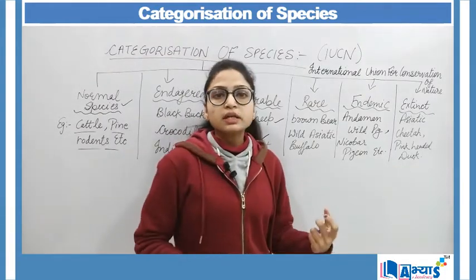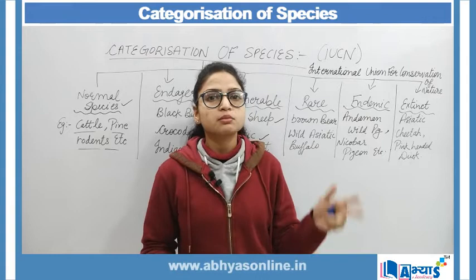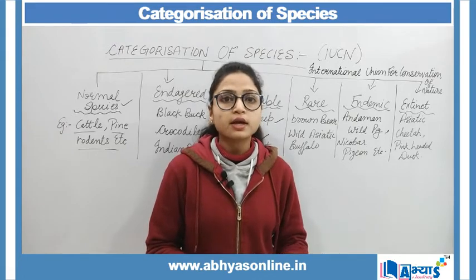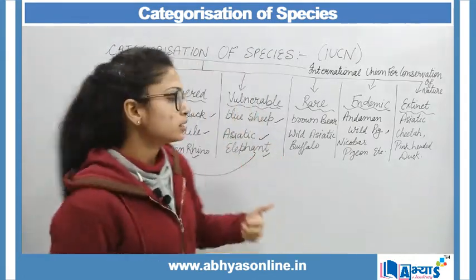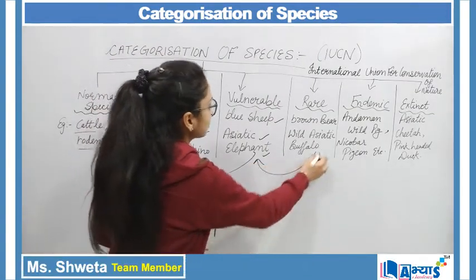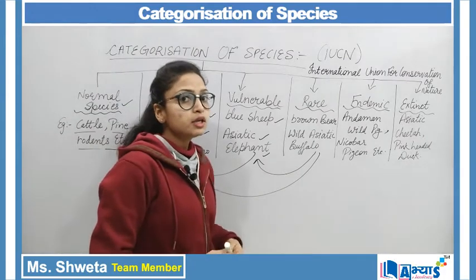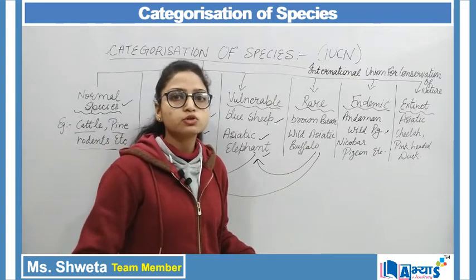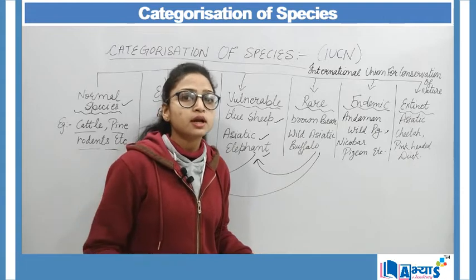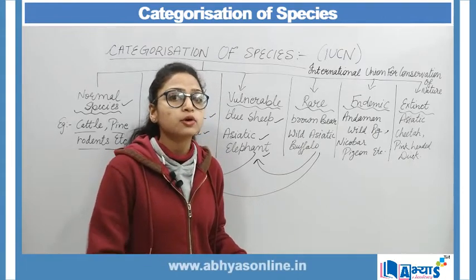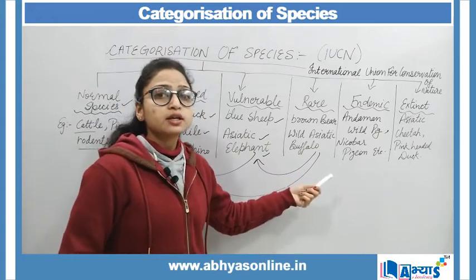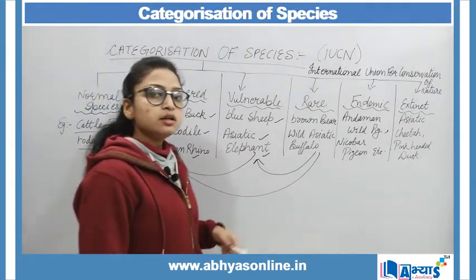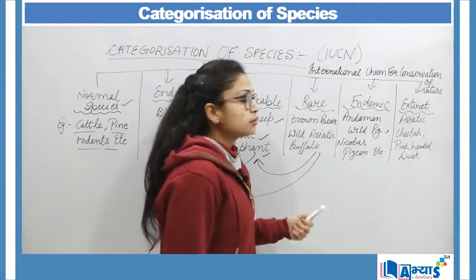Rare species का मतलब होता है बहुत कम। Rare species के अंदर जो भी animals या plants include किये जाते हैं वो बहुत ही कम रह गए हैं, बहुत थोड़ी उनकी population रह गई है। यह भी आने वाले सालों में vulnerable या endangered category में include हो जाएंगे, अगर pollution बढ़ता रहा, population grow करती रही, और industrialization की वजह से deforestation भी बढ़ता जा रहा है।